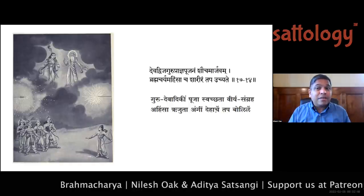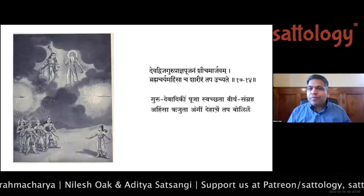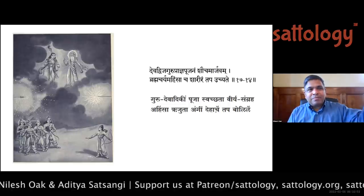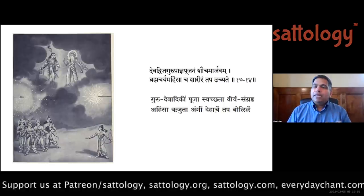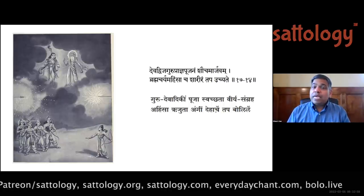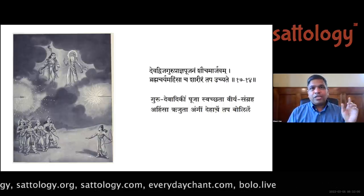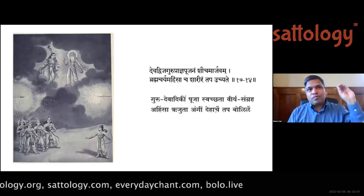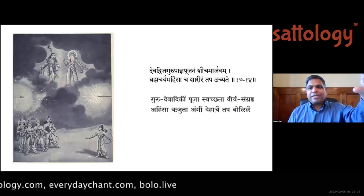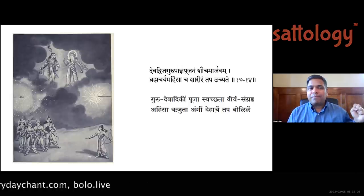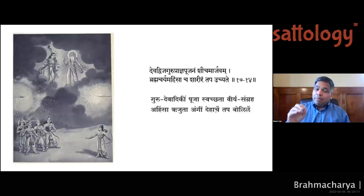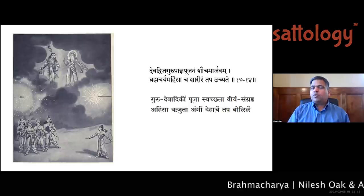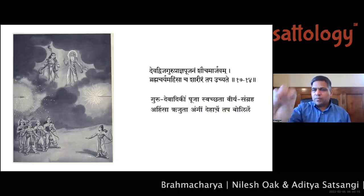Mahabharata tells us — in the Sauptika Parva — that while Ashwatthama could not take the brahmastra back, Arjuna could. The skill is involved, the tapa is involved, and the mano vak kaya sayyama — the sayyam on intellect, mind, and body — that comes into sayyam in your skill set, whatever skills you have.